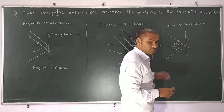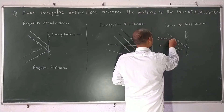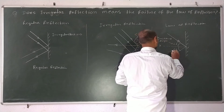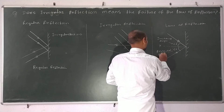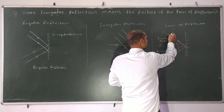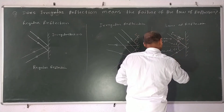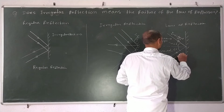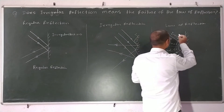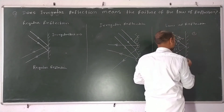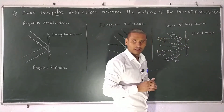The angle i means the incident angle, and angle r means the reflected angle. This ray is called the incident ray and this ray is called the reflected ray. So the first law of reflection states that angle i equals angle r — the incident angle equals the reflected angle.